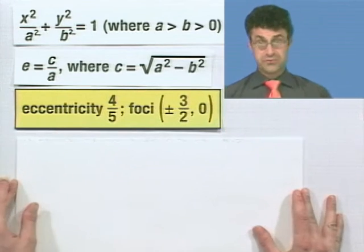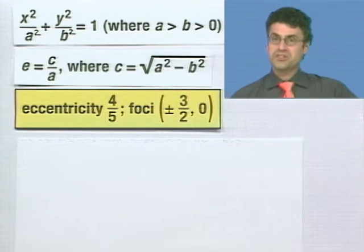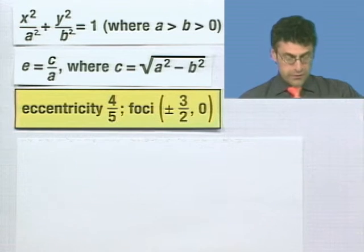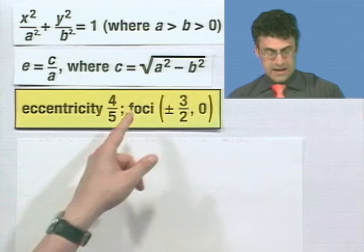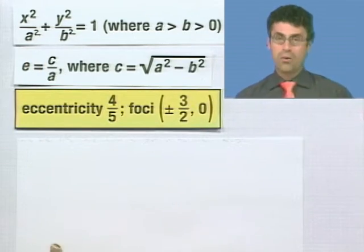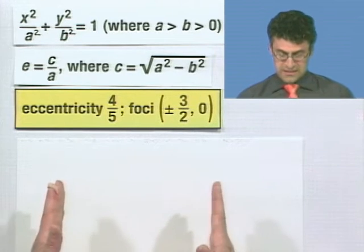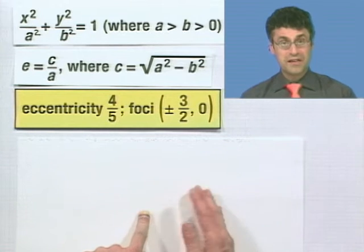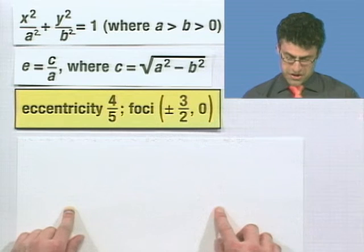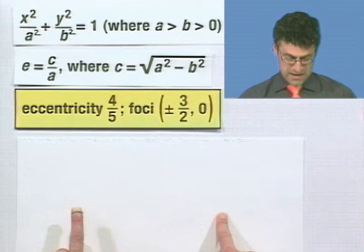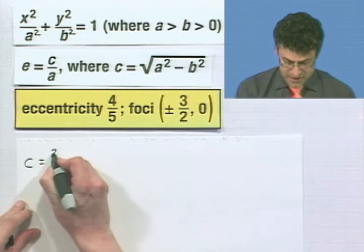Suppose we're given the eccentricity is 4 fifths, which is really close to 1, and we're given that the foci are located at plus or minus 3 halves comma 0. The question is, can we figure out the equation for this particular ellipse? The first thing we have to do is see if we can find c. We don't know a squared, we don't know b squared, so this formula is not going to help us. But remember, c represents half of the distance between the two foci, or the distance from the center of the ellipse out to one of the foci. Since I know that the foci are centered around the origin because one is at 3 halves comma 0, and the other one's at negative 3 halves comma 0, 0 is right in between, and so that length right there is 3 halves, and we know that equals c. So c equals 3 halves.